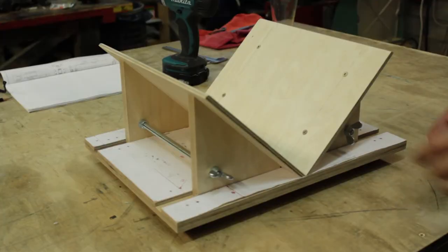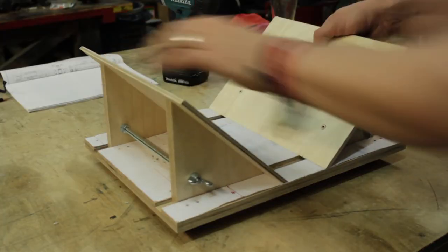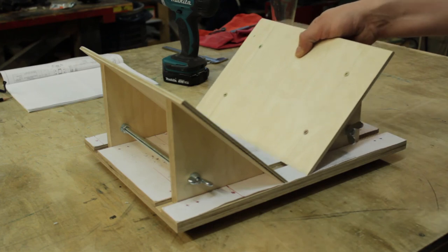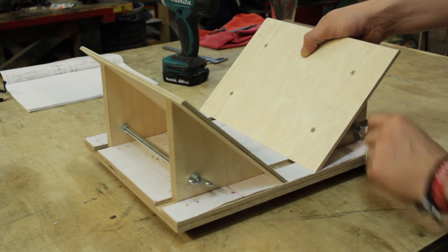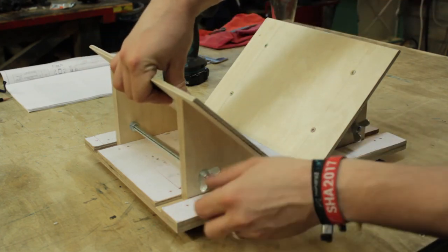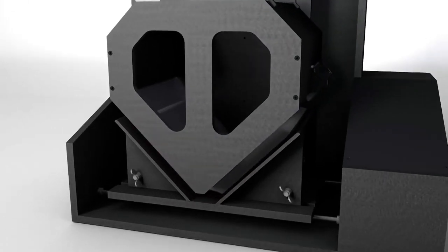The book holder is now finished. It works like this. You can adjust the width of the book holder according to the thickness of your book. And as soon as you found the correct setting, fix the book holder in its position with these screws. Thanks for watching.